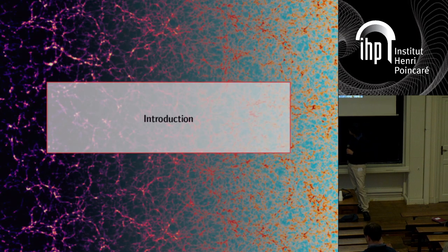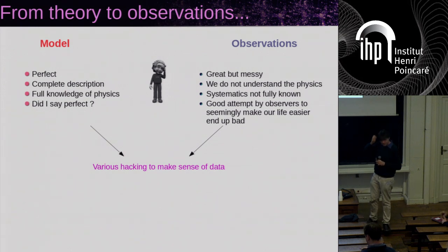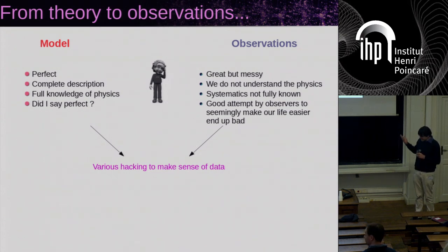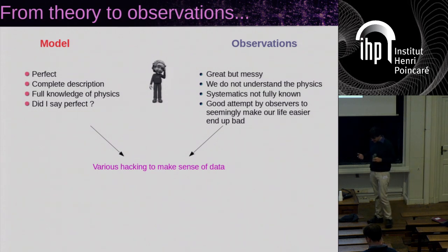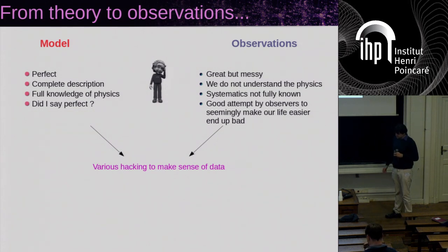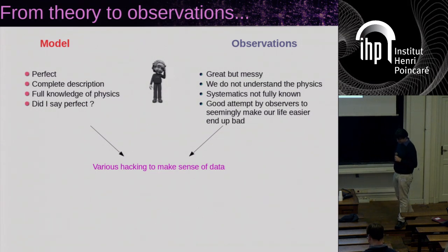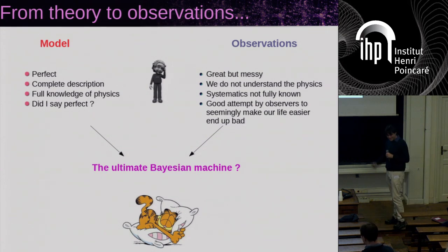So first, what's the framework? The idea is that generally when we have a model, we like to make models very precise and we always claim we basically have to assume they are perfect most of the time when you do fitting. On the other hand, you have observations that are great but messy because of the different limitations of instrumentation and because we don't control everything in the pipeline. So observers do their best, but we still end up having to interpret this data with the best that we can. We end up having to do various hacking on both model and observations to try to make sense. The question is: can we automate all this and make a machine that does the job for us, so we can do physics and live happily ever after?